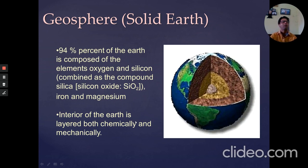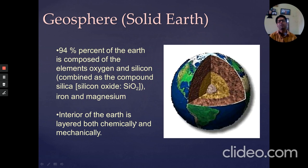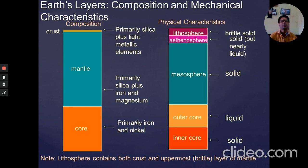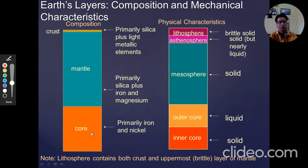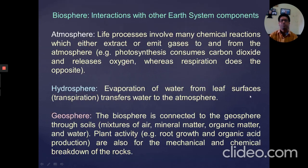The geosphere is the solid part of the Earth. About 94% of the Earth is composed of oxygen and silicon combined as silica compounds, along with iron and magnesium. The interior of the Earth is layered both chemically and mechanically. The diagram shows Earth's layer composition: the mantle, the core, and their different physical characteristics. The lithosphere is the brittle solid part, the asthenosphere is solid but nearly liquid, the outer core is liquid, and the inner core is solid. The core is primarily iron and nickel, the mantle is primarily silica plus iron and magnesium.